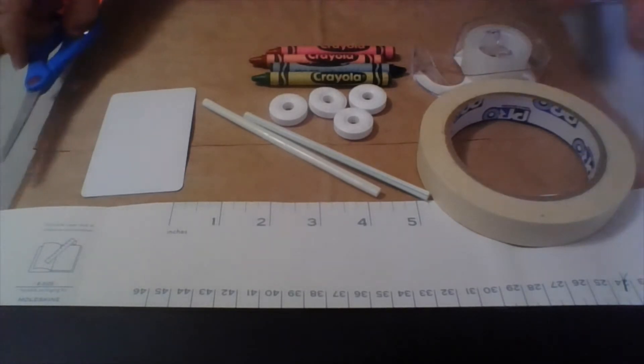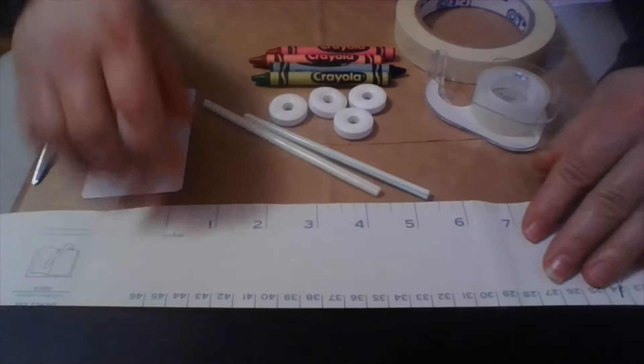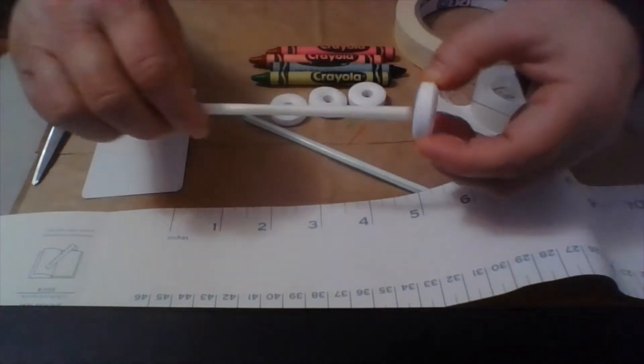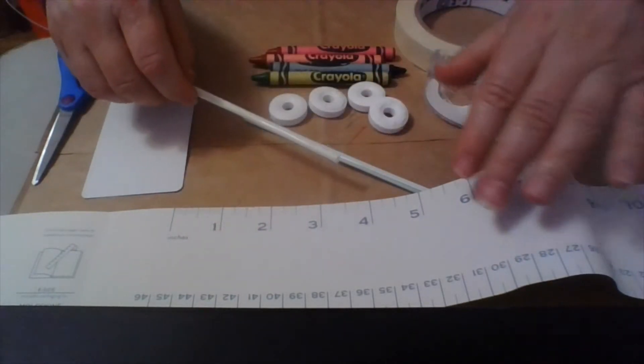So what you're going to need to do first is to make your axles. Now axles are the things that hold your wheels on and an axle and a wheel is called a simple machine.